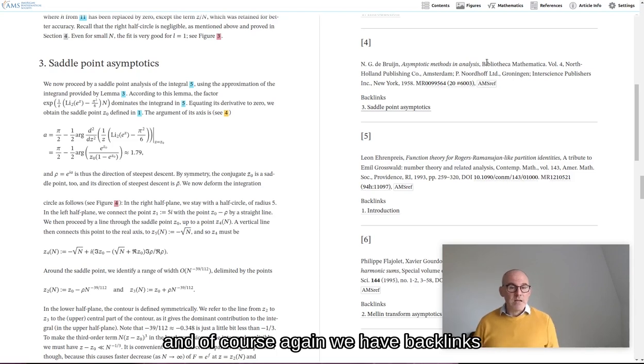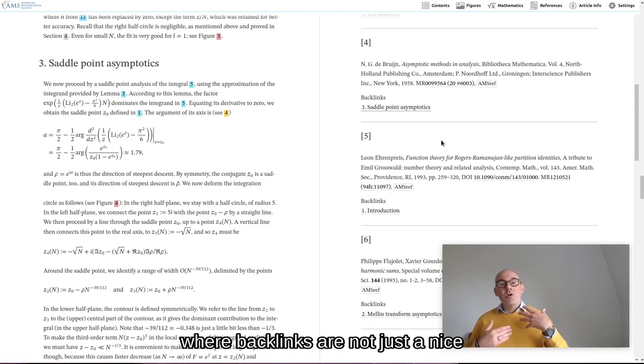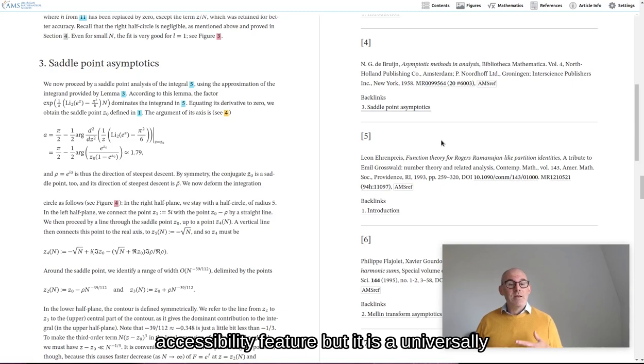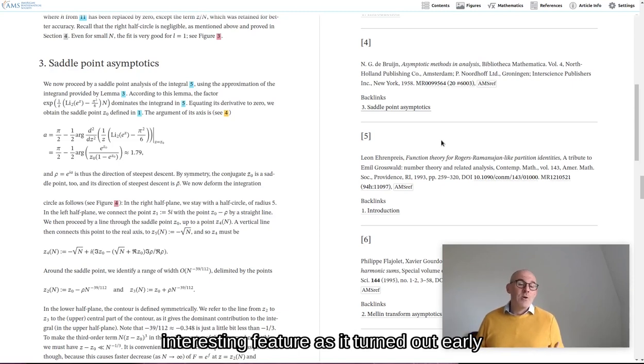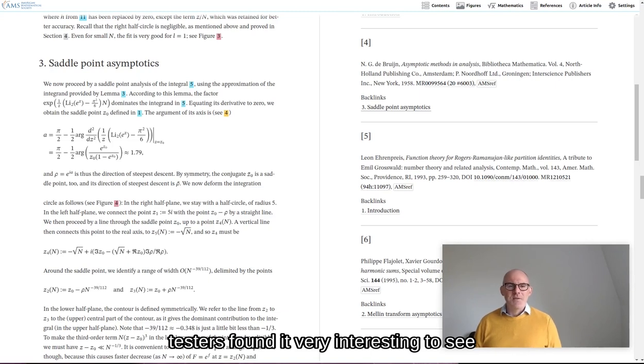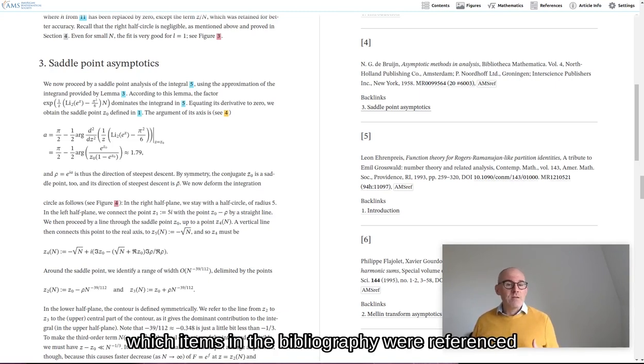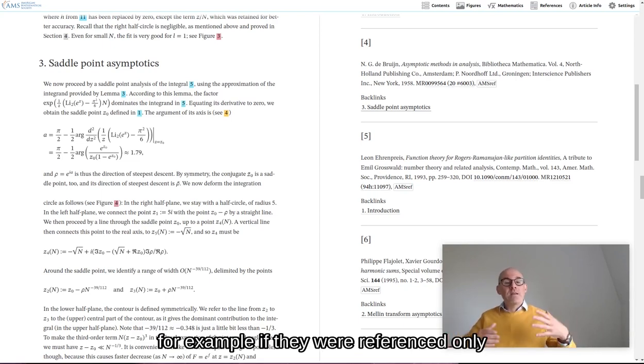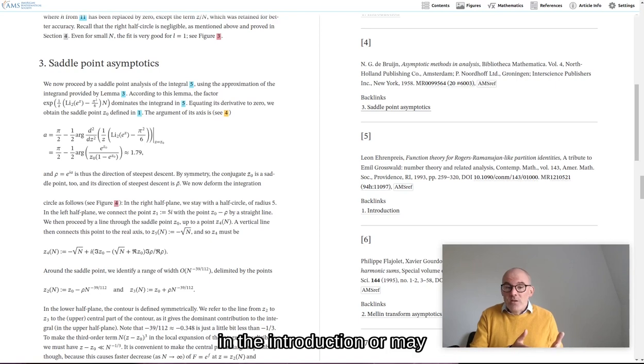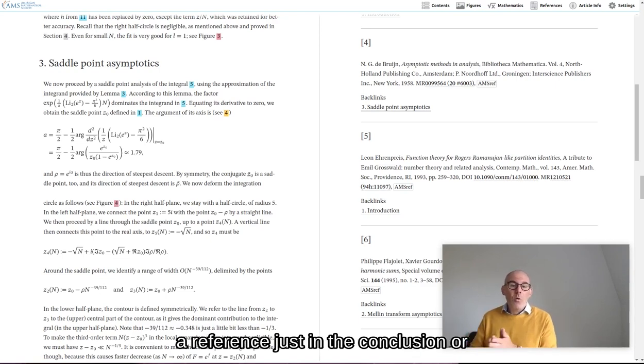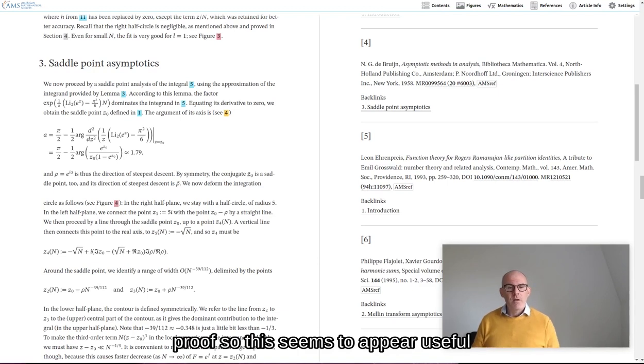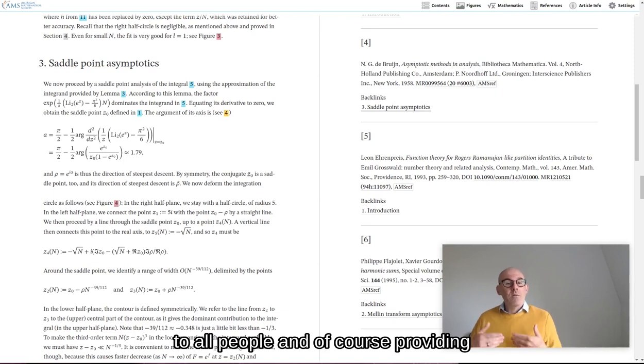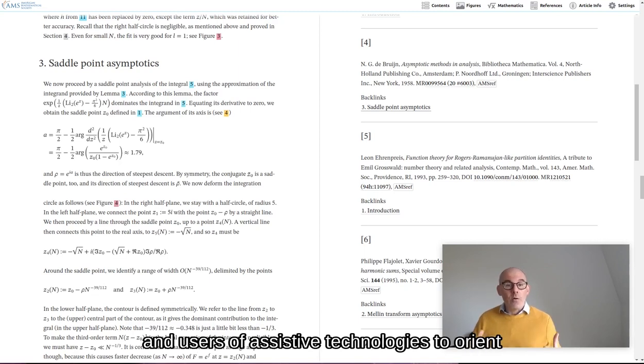And of course, again, we have backlinks. This is actually a perfect example where backlinks are not just a nice accessibility feature, but it is a universally interesting feature. As it turned out, early testers found it very interesting to see which items in the bibliography were referenced many times across a paper, and where, for example, if they were referenced only in the introduction or maybe referenced just in the conclusion or in a particular section or a particular proof. So this seems to appear useful to all people. And of course, providing a great benefit for non-visual users and users of assistive technologies to orient themselves.